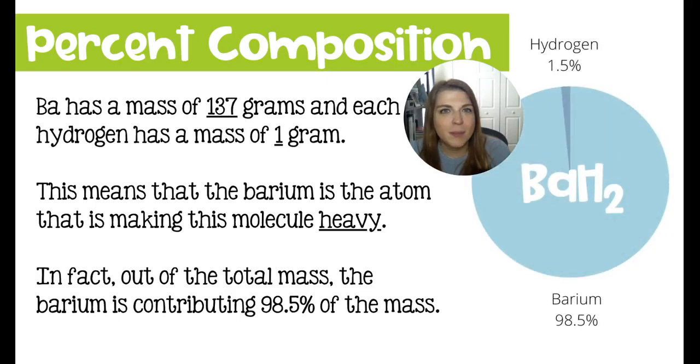We're going to take a look at barium hydride. Just like the grocery bag example, this has three components: one barium and two hydrogens. The barium makes up 137 grams of this compound, and the hydrogens collectively make up two grams. This molecule is 139 grams per mole. The barium makes up most of the mass, and those two hydrogens contribute almost nothing - not even two percent of the mass belongs to hydrogen.